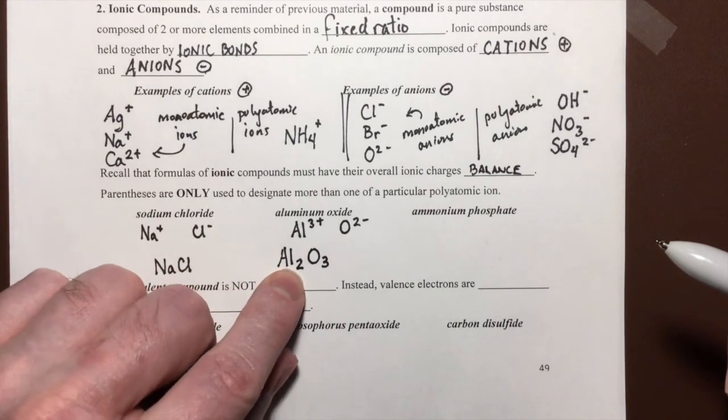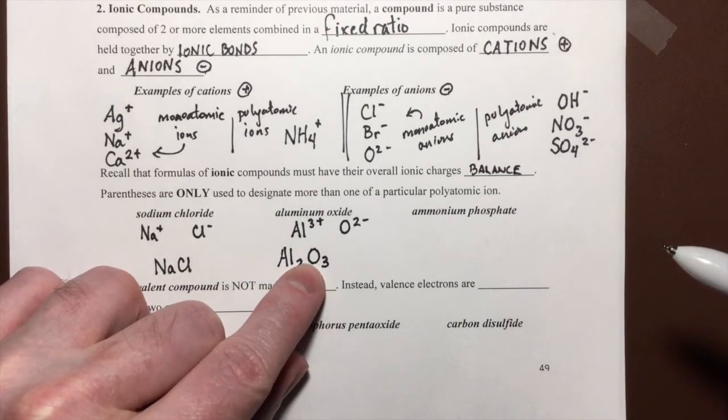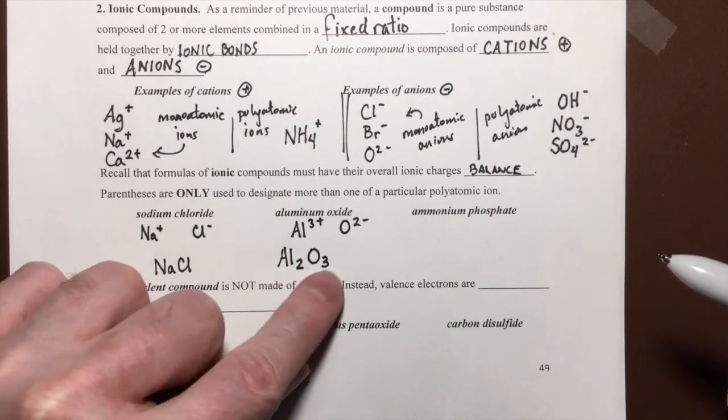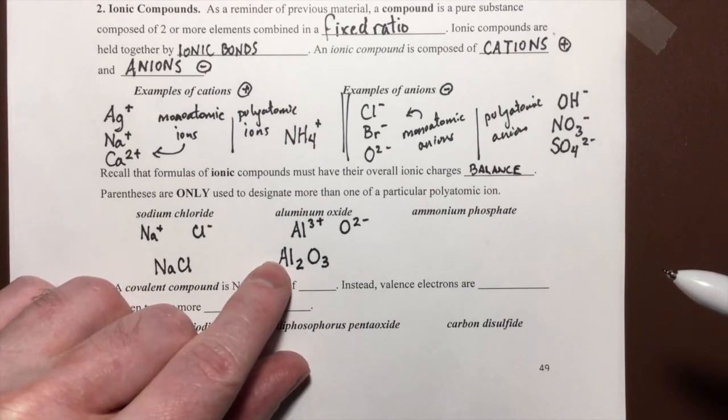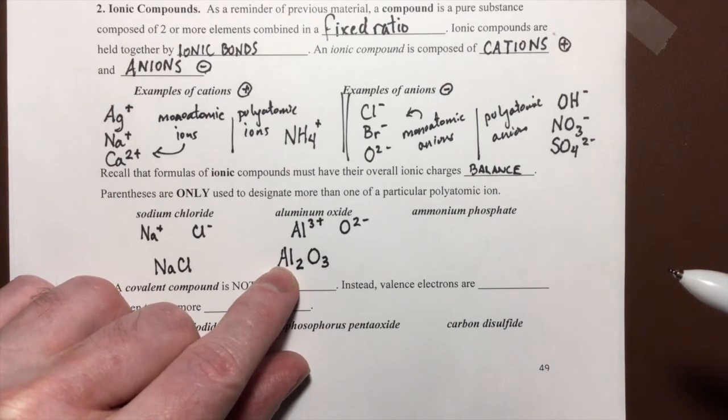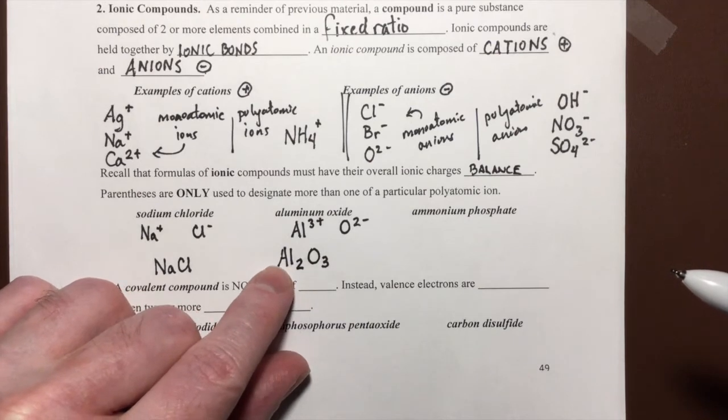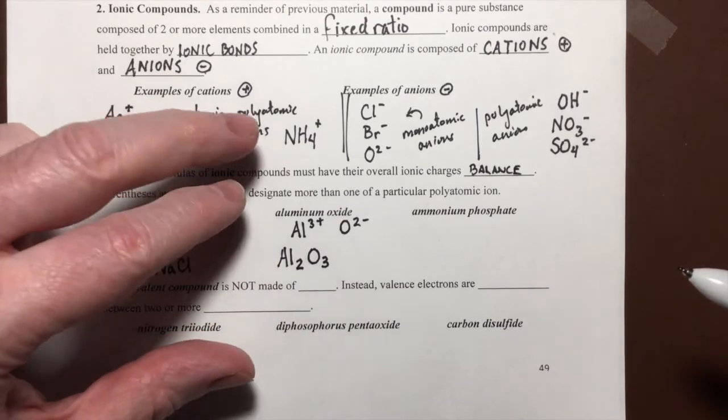And there we go. There's the formula for aluminum oxide. This formula shows that we have 2 aluminums, 3 oxygens as oxide ions. And there's our formula. It is perfectly balanced. Notice that this 2 does not mean that I have a polyatomic cation with 2 aluminums in it. No, it means I have 2 monoatomic aluminum ions.